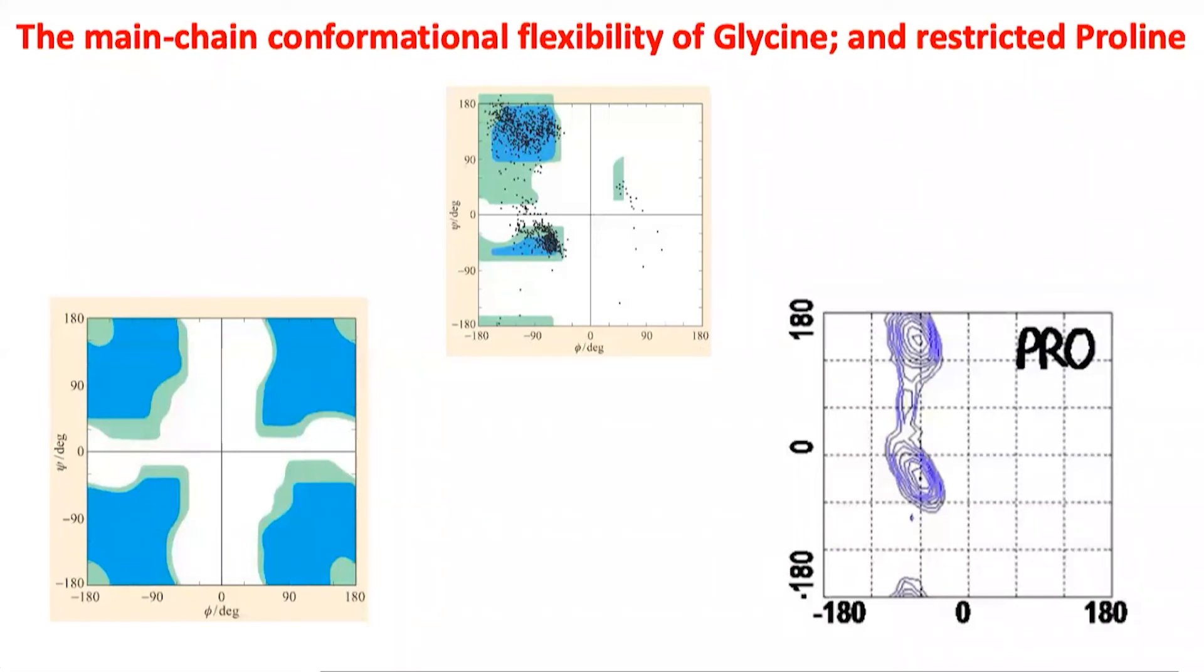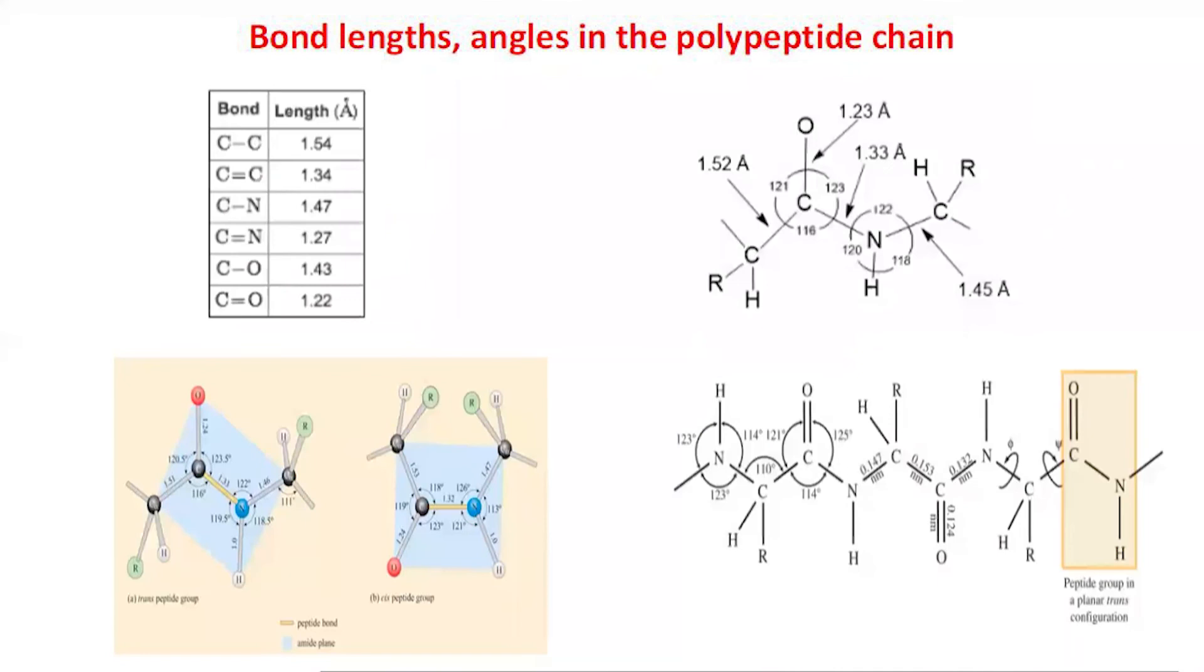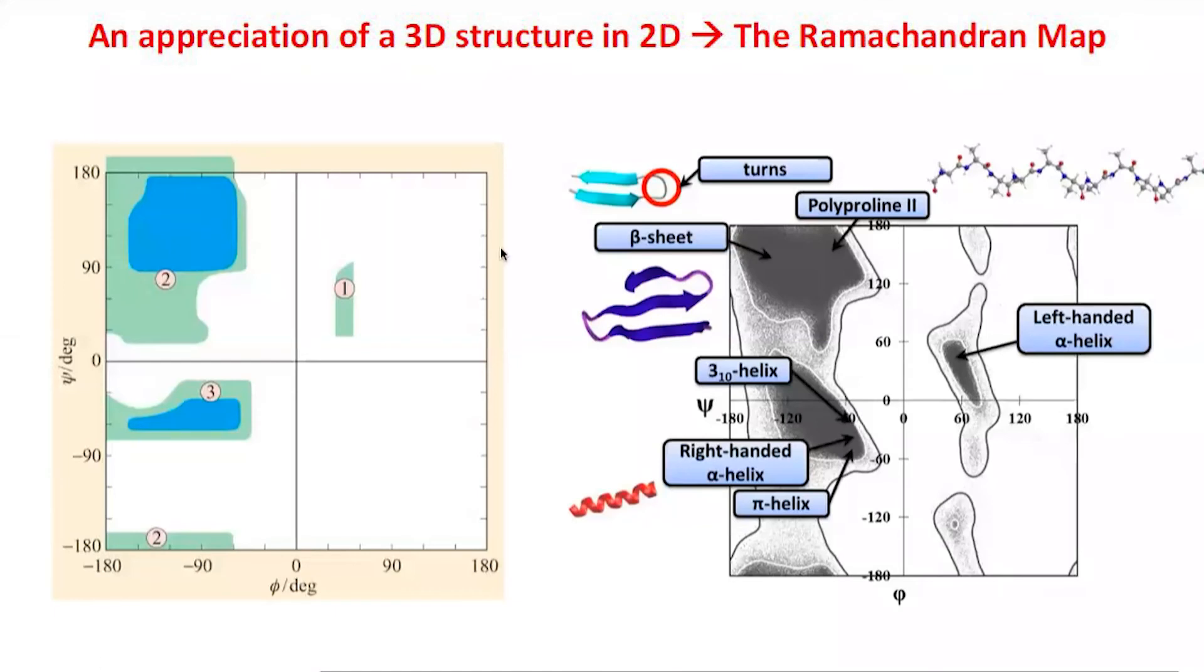A student asks about plotting phi-psi graphs for proteins. The professor confirms that for every four-atom combination in the protein chain, you measure phi and psi and plot them. Not only do they plot it for an entire protein, but they also plot it for all the one hundred thousand proteins in the protein data bank, which is what the densely crowded picture shows.